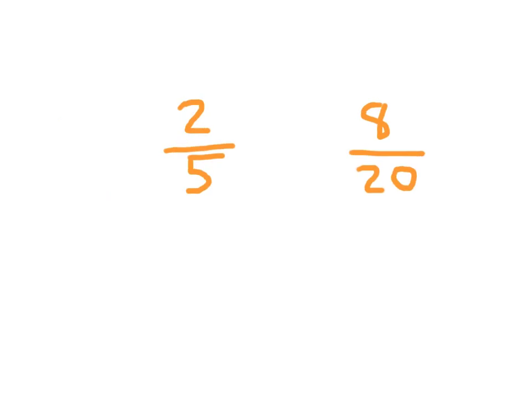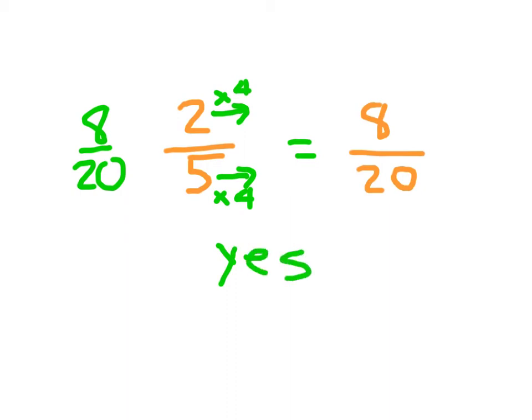2 fifths and 8 twentieths. I recognize that I can get from 5 to 20 by multiplying by 4 in both the numerator and denominator. So 2 times 4 is 8, 5 times 4 is 20, so 2 fifths does equal 8 twentieths - those two are equivalent.